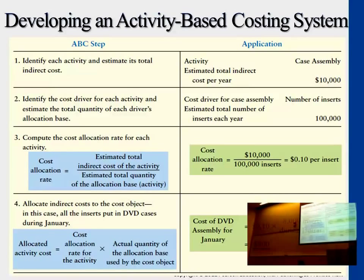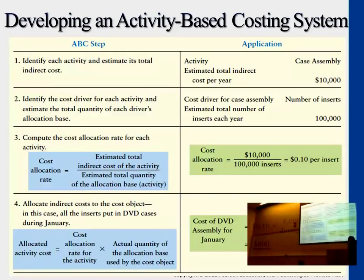So this is applying the same logic as we covered in the previous chapter for predetermining manufacturing overhead. It's just we're doing multiple ones — one for each activity — finding the total cost, identifying the driver of that activity, and multiplying the rate by the actual quantity. That's all we're doing here.